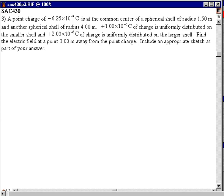SAC 430 problem number three is a Gauss's law problem. Let's draw a picture of this one. We have Q of negative 6.25 microcoulombs surrounded by some positive charge on a spherical shell.